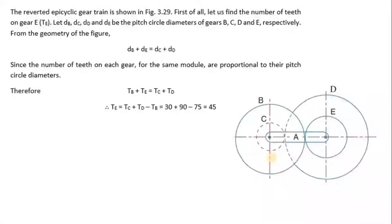So the reverted epicyclic gear train as shown in the figure. First of all, let us find out the number of teeth that is on the gear E, that is TE. Let DB, DC, DD and DE be the pitch circle diameters of gear B, C, D and E respectively.